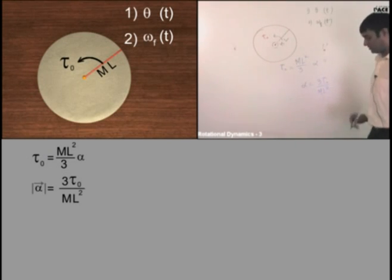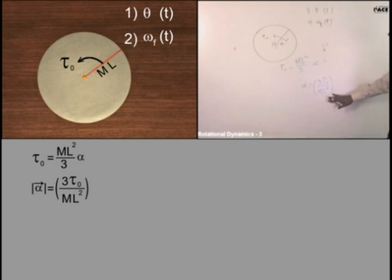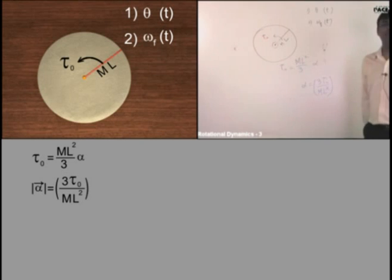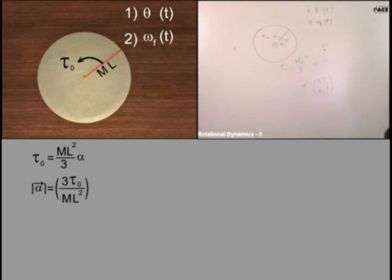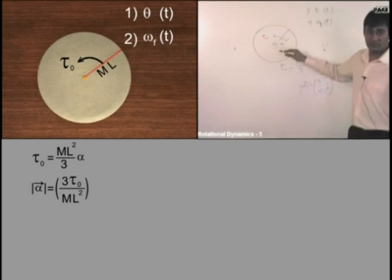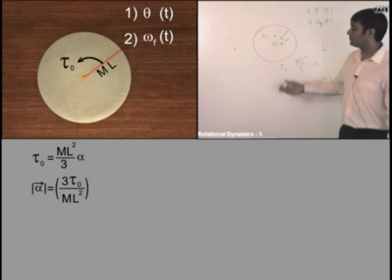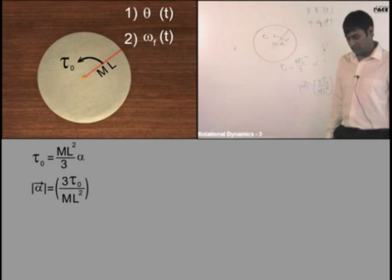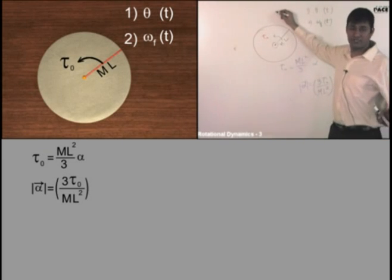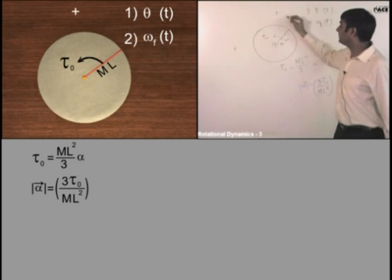Is this angular acceleration correct? What is the direction of torque? Anti-clockwise from your side. So the direction of angular acceleration will also be anti-clockwise. Let us assume anti-clockwise direction to be positive. We note the positive direction symbol so that we don't forget.